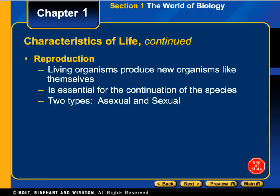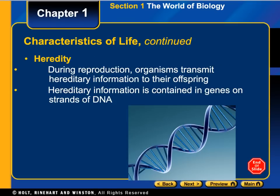Another property of life is reproduction. All living organisms are capable of producing new organisms like themselves; it is essential for the continuation of the species. There are two types of reproduction we'll cover in this course: asexual and sexual. Another property of life is heredity — during reproduction, organisms transmit hereditary information like DNA to their offspring.